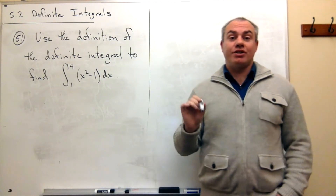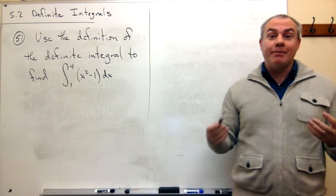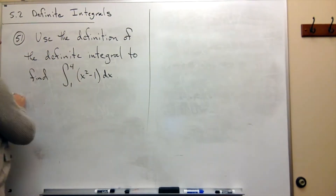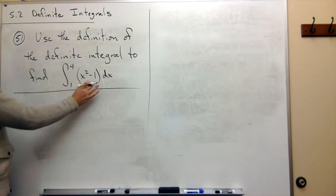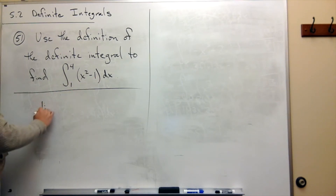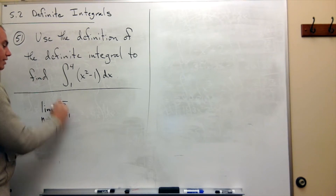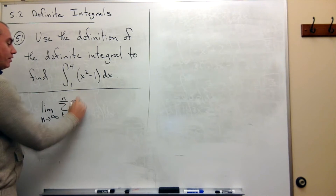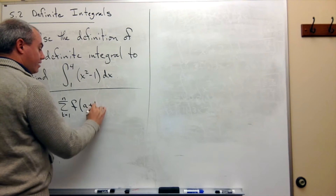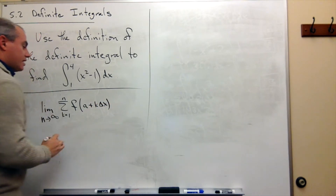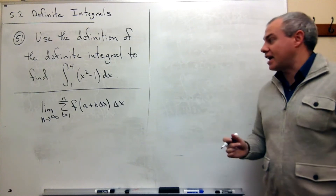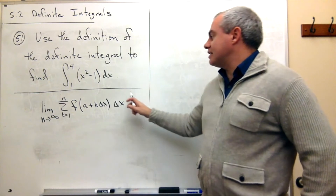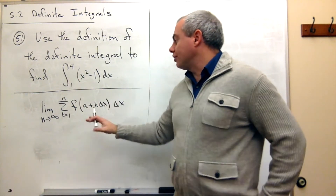If we're going to use the definition of the definite integral, then we're actually going to take a limit of a sum in some sense. So what I want to do is first write down a Riemann sum. If I'm using a Riemann sum and I'm going to use a limit to take this definite integral, then I'm going to want to look at the limit as n goes to infinity of the sum k going from 1 to n of f of a plus k delta x times delta x, where delta x is something fixed. Here is the limit that I need to take to evaluate this limit once I know what all the pieces of this puzzle are.